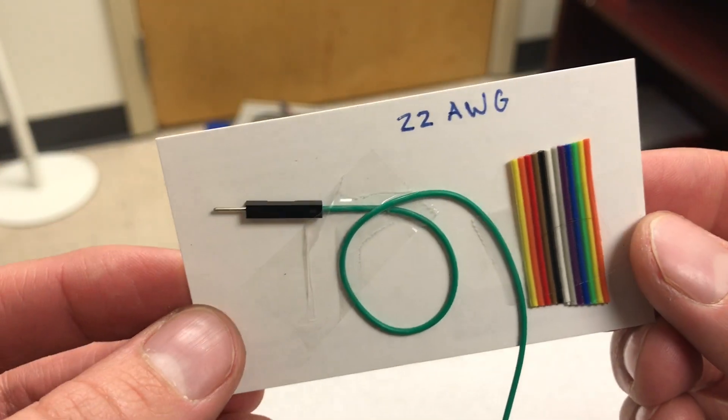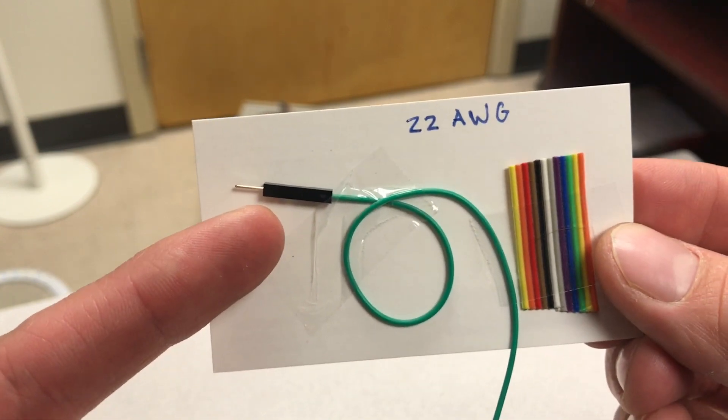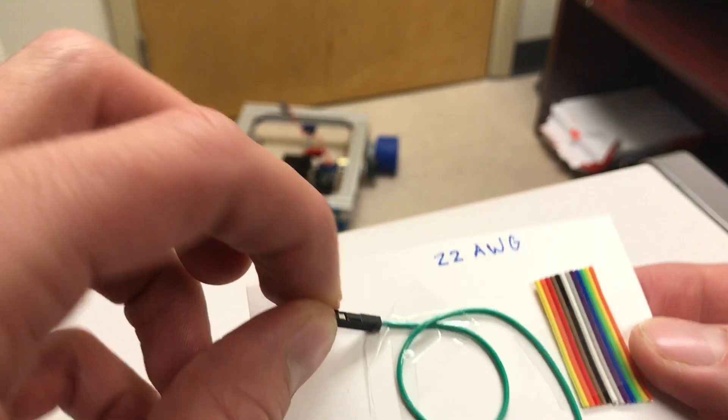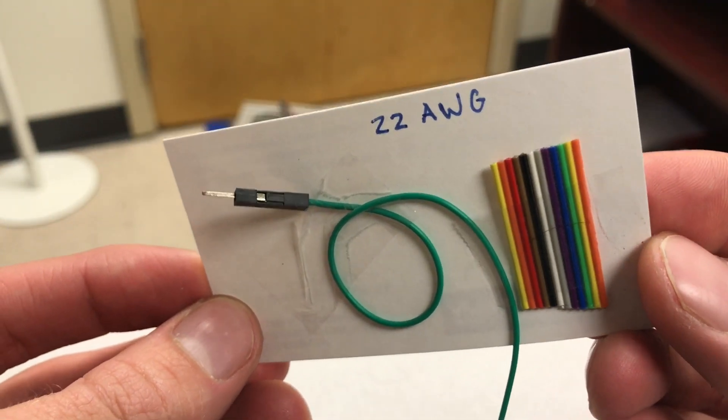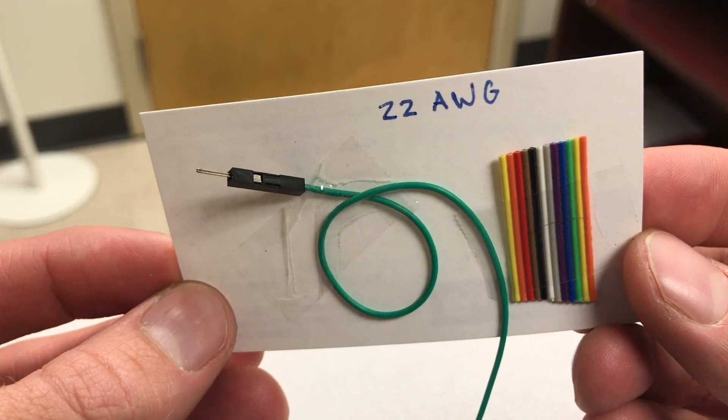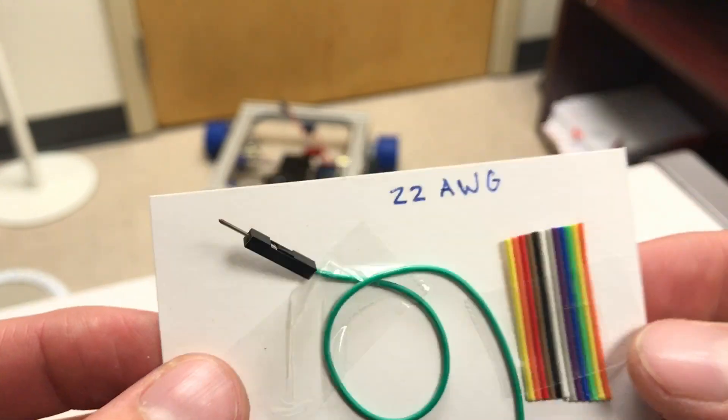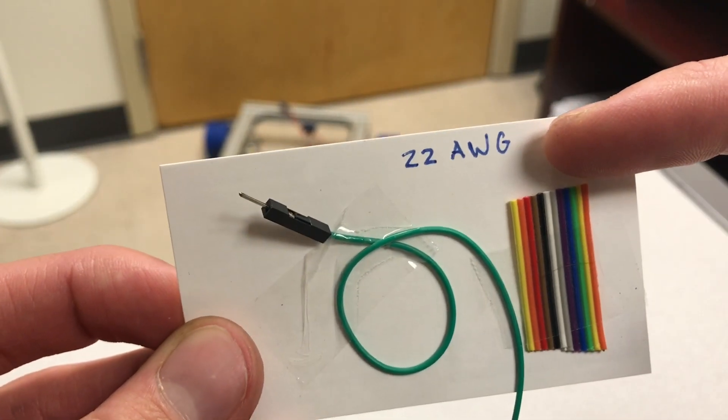This video is on the anatomy of the DuPont connector. There may be a non-brand specific name for this kind of connector, but I don't know what it is. These are very common for carrying signal wires on robotics projects, and they are not common for carrying power. It's usually not a good idea because they are usually 22 gauge, which cannot carry very much current.